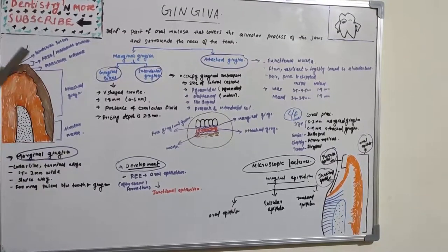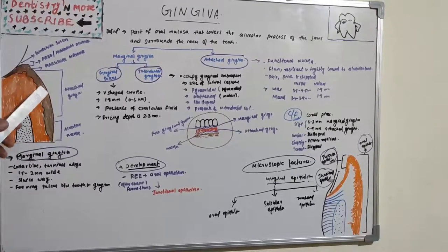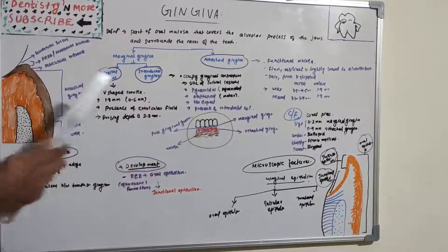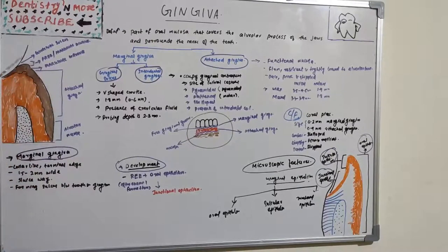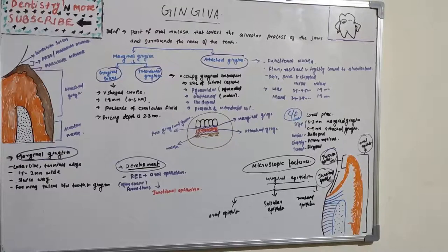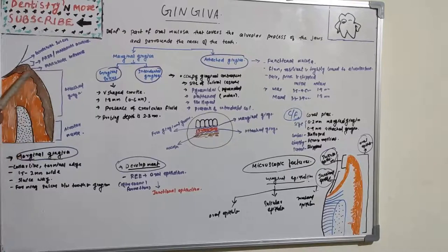Marginal Gingiva basically has two parts: the gingival sulcus and interdental Gingiva. The gingival sulcus is a V-shaped crevice with a basic depth of 1.8 mm, ranging from 0 to 6 mm, which contains crevicular fluid or GCF. The probing depth is usually 2 to 3 mm. The same anatomy is shown in both frontal and side views.